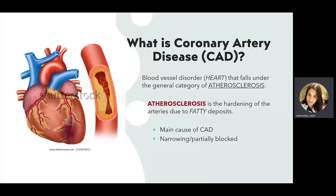The coronary circulation is what provides nutrients, oxygen, and blood to the heart muscle. What happens is that these blood vessels — specifically the arteries — get filled with fatty deposits and plaque, which we call atherosclerosis. That is the main cause of coronary artery disease: fat buildup within the walls of the arteries.